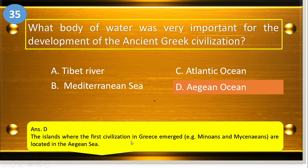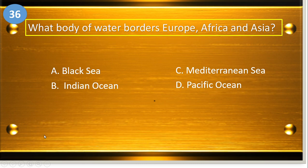The islands where the first civilization in Greece emerged — the Minoans and Mycenaeans — are located in the Aegean Sea.